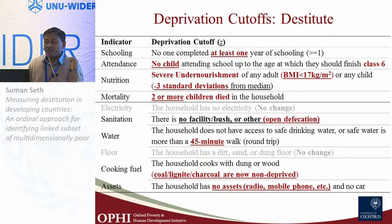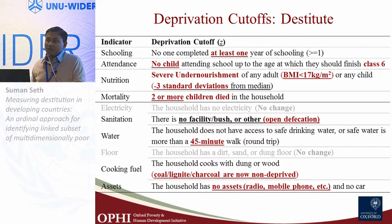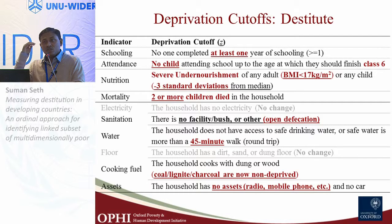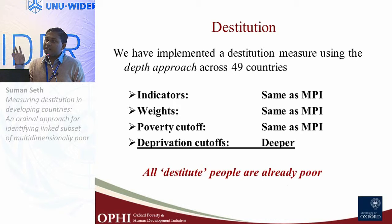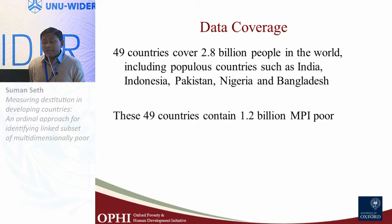We try to link these deeper deprivation cutoffs to WHO cutoffs for severe malnutrition or MDG thresholds where possible. For two indicators — electricity and floor — we could not set deeper cutoffs because we only have binary access information (yes or no). The indicators remain the same, the deprivation cutoffs are deeper, weights are the same, and the poverty cutoff remains one third. Destitutes are therefore identified as those deprived in one third of the deeper weighted deprivation cutoffs. Our empirical application covers 49 countries using Demographic Health Survey or Multiple Indicator Cluster Survey data.